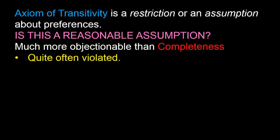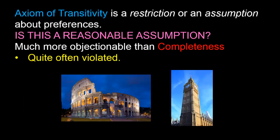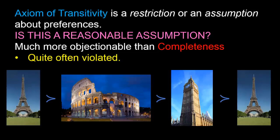Consider an example. Suppose I ask John whether he'd rather go to Paris or Rome for a vacation, and he says he'd rather go to Paris. Then I ask whether he'd rather go to Rome or London, and he says he'd rather go to Rome. Then I ask whether he'd rather go to London or Paris, and he says he'd rather go to London. These three responses don't each sound unreasonable on their own, but taken together they actually violate the axiom of transitivity.